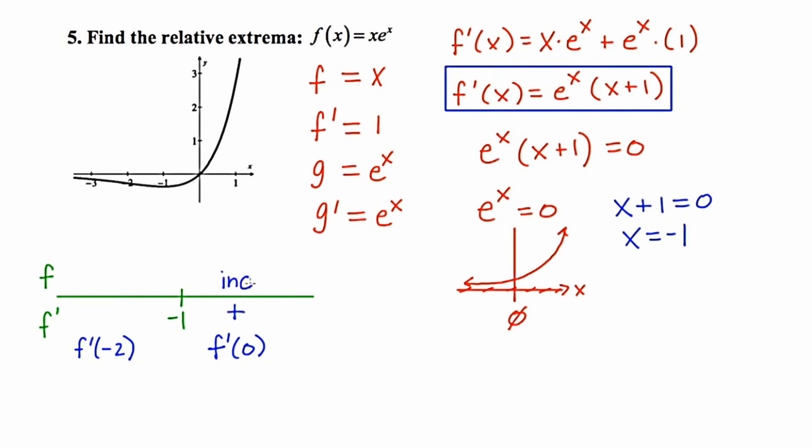And that value is positive, which means that the graph is increasing. And if we cheat by looking up here, we can see that it is increasing.